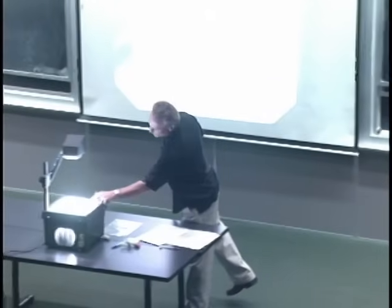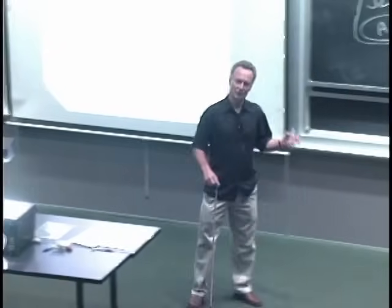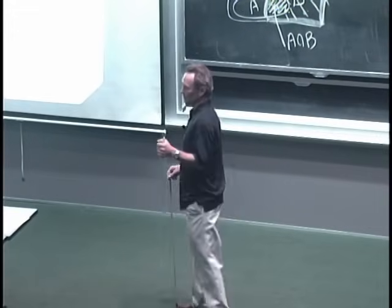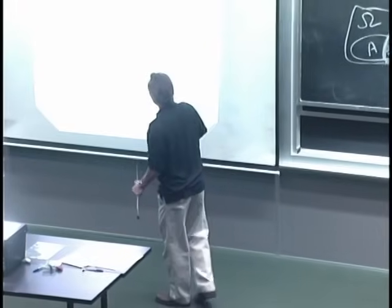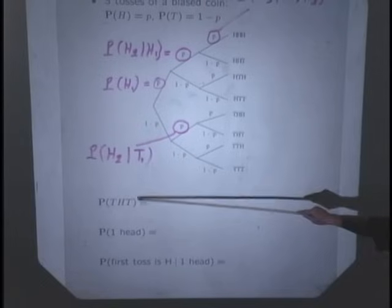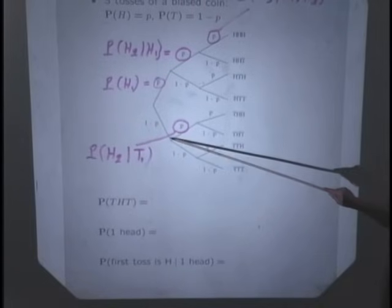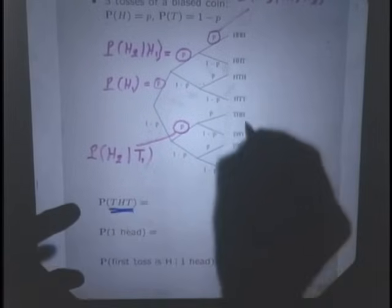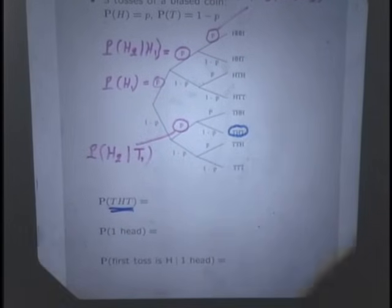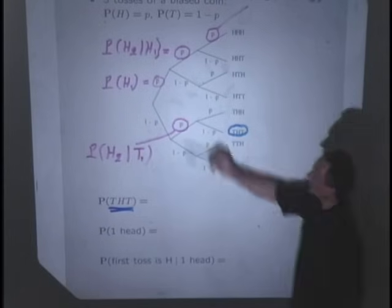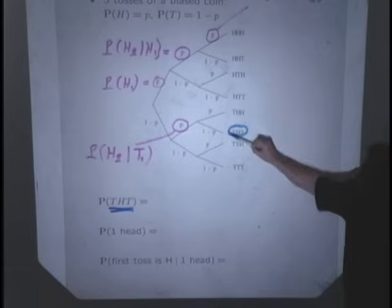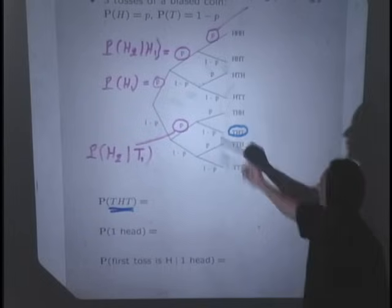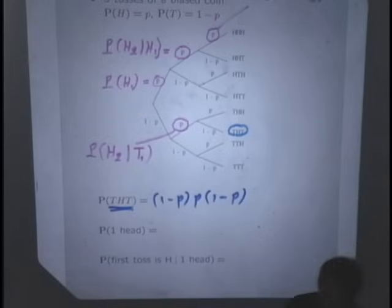Before we get to independence, let's practice the three skills covered last time using this example. First skill: the multiplication rule. How do you find the probability of tails followed by heads followed by tails? We calculate this by multiplying conditional probabilities along the path to that outcome — giving us (1−P) × P × (1−P).